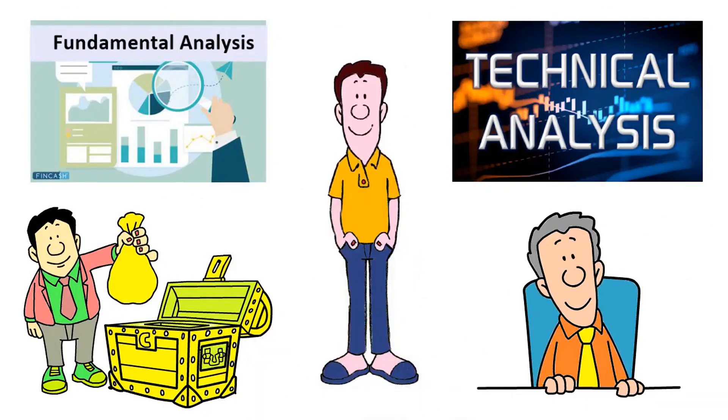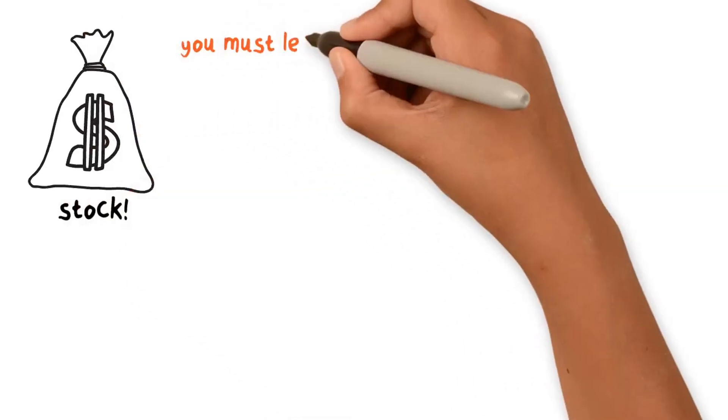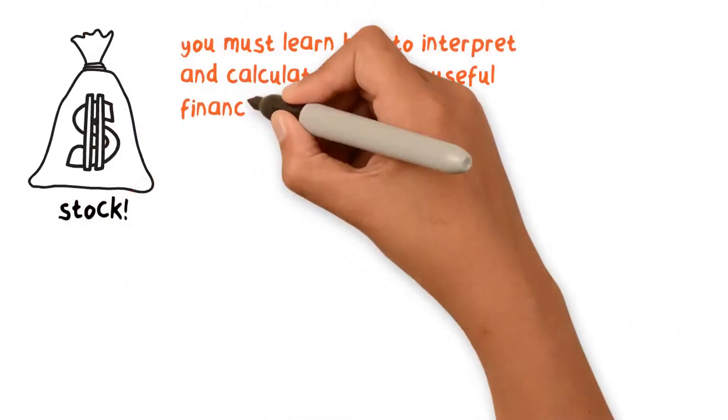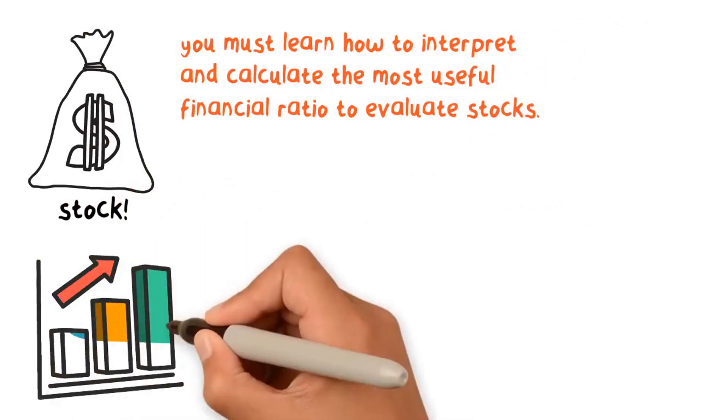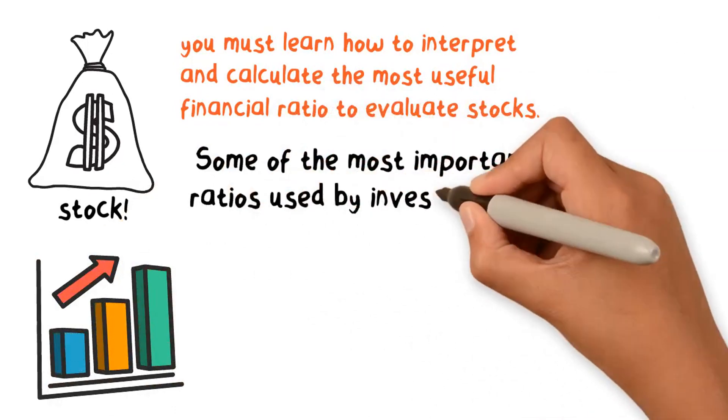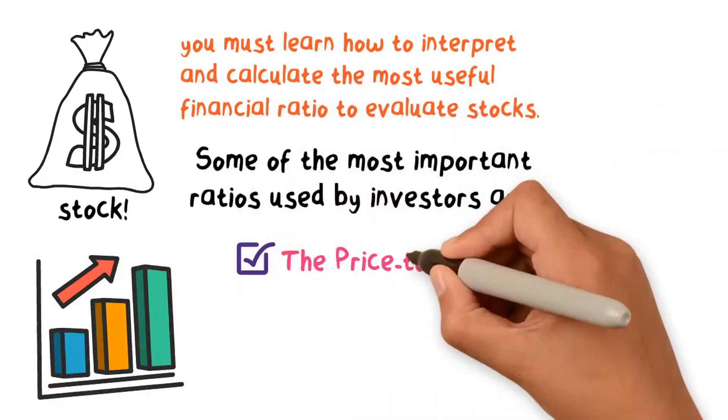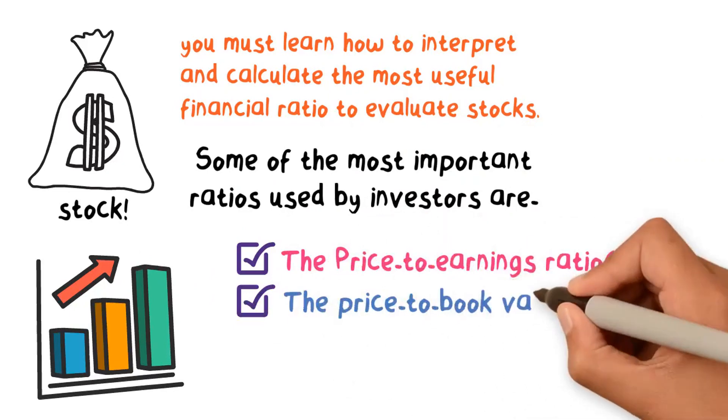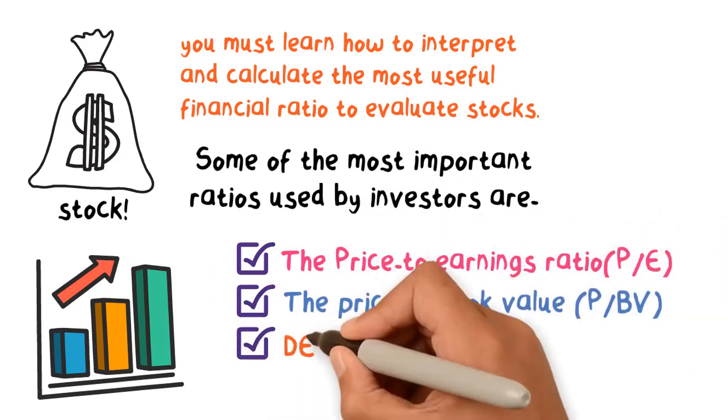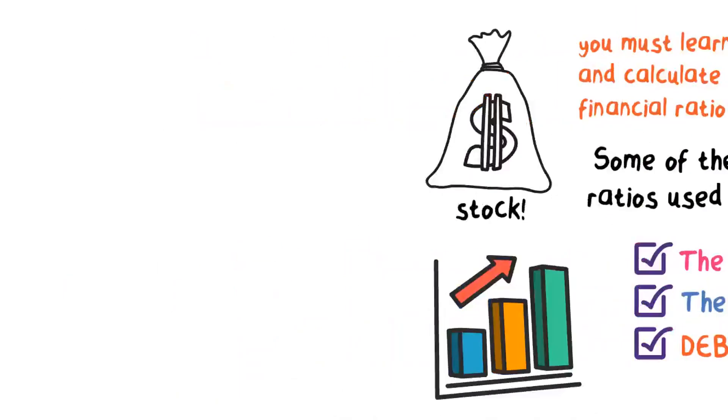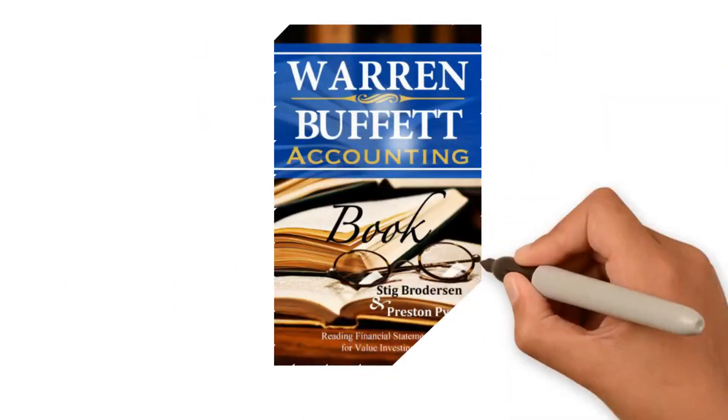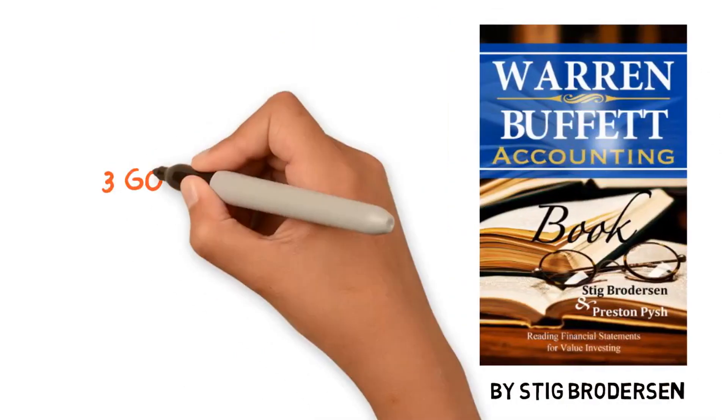Okay, before you start investing in any stock, you must learn how to interpret and calculate the most useful financial ratios to evaluate stocks. Ratios provide insight into a company's financial health. Some of the most important ratios used by investors are the price-to-earnings ratio (P/E), the price-to-book value (P/BV) ratio, and debt-to-equity ratio. So if you want to improve your knowledge about how to evaluate stocks, I recommend that you read Warren Buffett Accounting Book by Stig Broaderson.